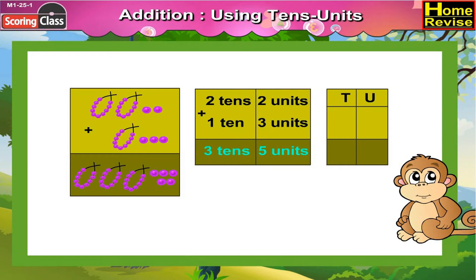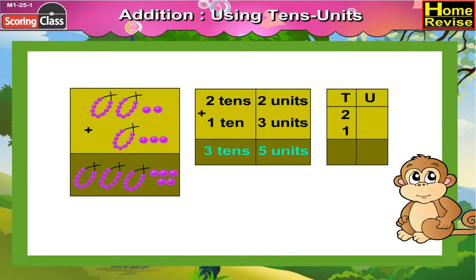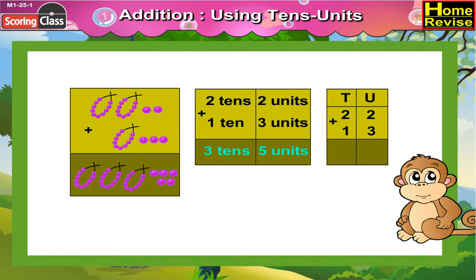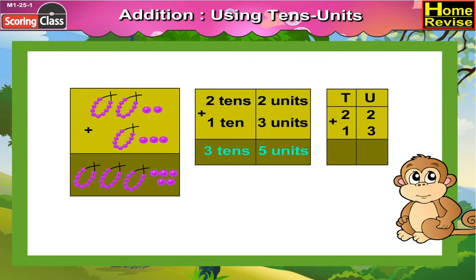Under 10s you will write 2 and 1, and under units you will write 2 and 3. So it is 22 plus 13, that is 35.